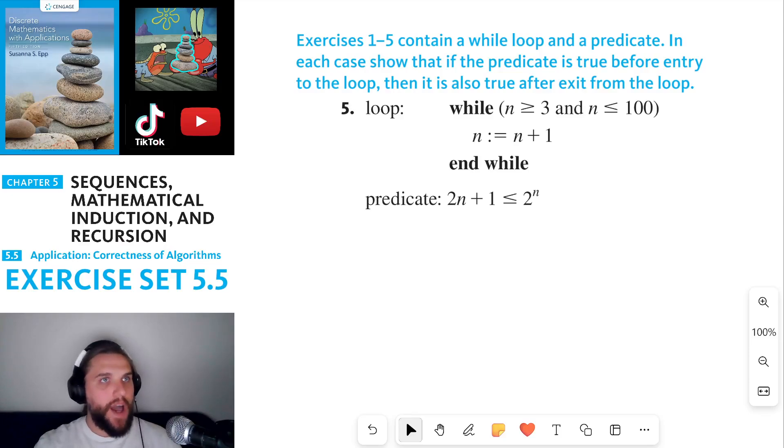Exercises 1 through 5 contain a while loop and a predicate. In each case, show that if the predicate is true before entry to the loop, then it is also true after exit from the loop.